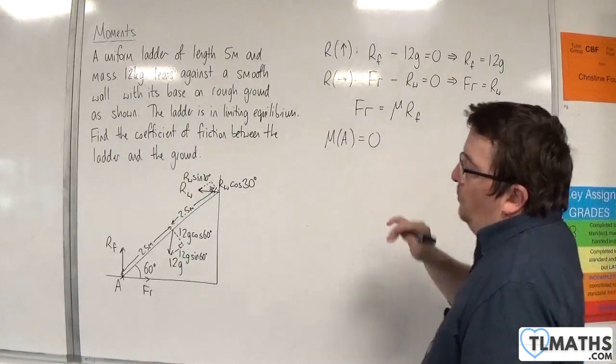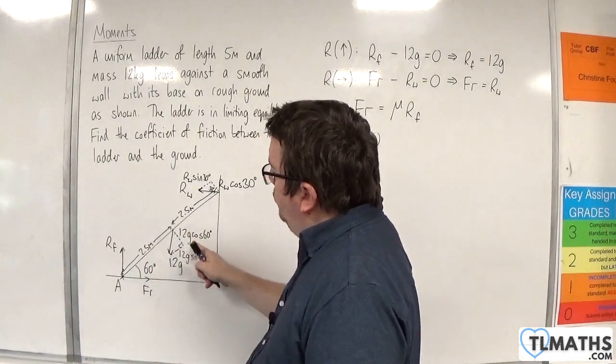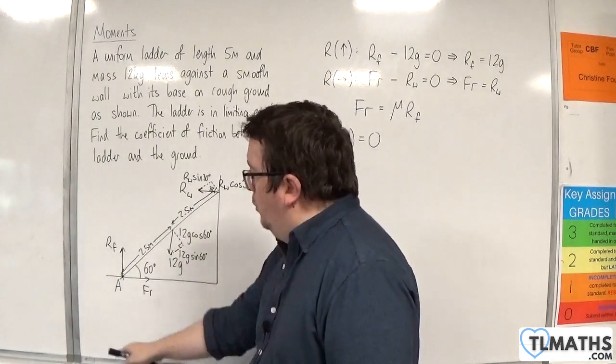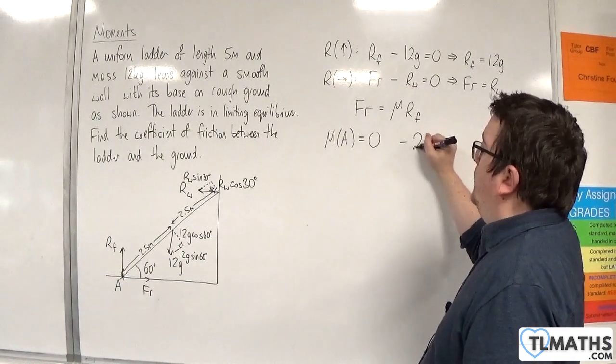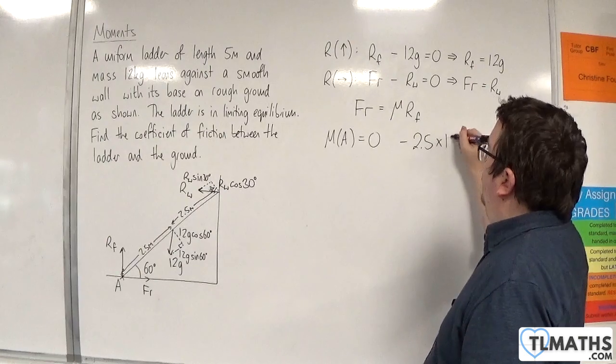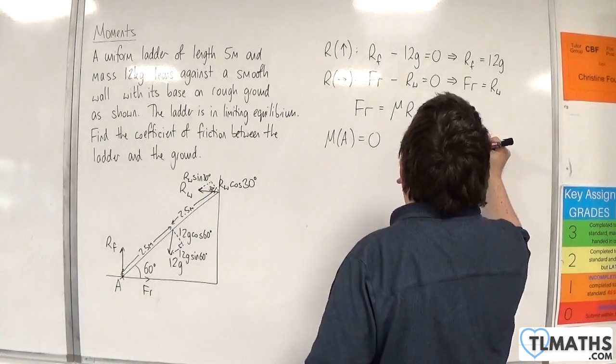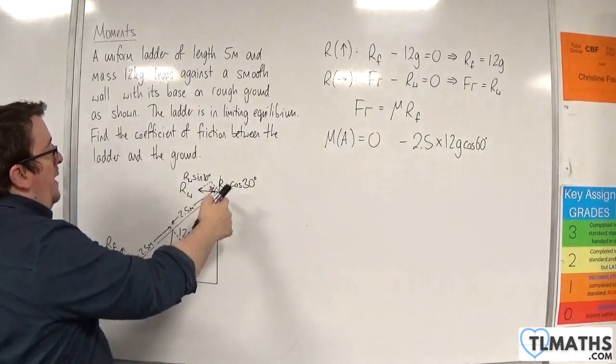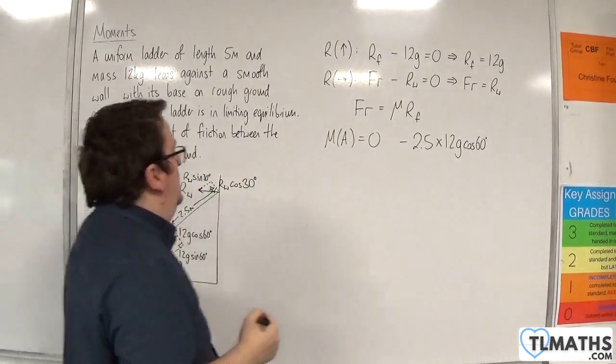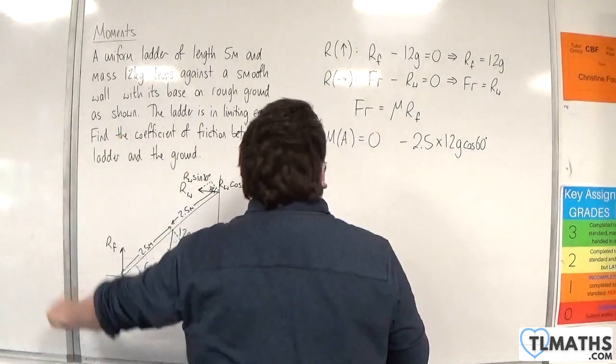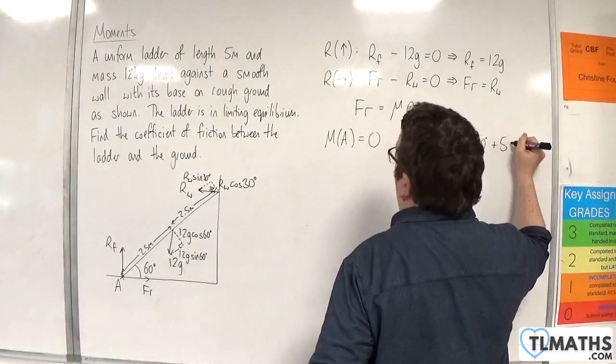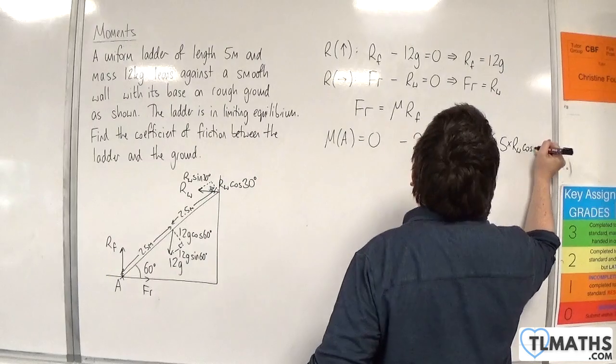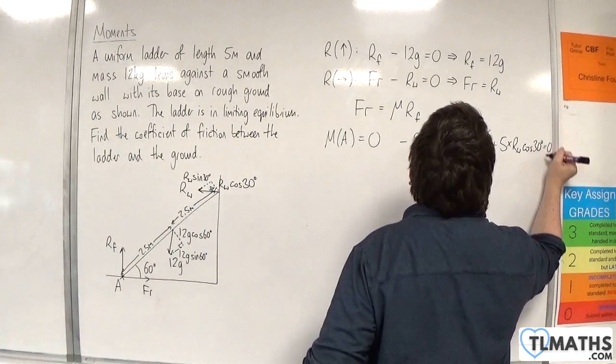Taking moments about point A then, we are 2.5 metres away from 12g cosine 60, and that's going clockwise. So take away 2.5 times 12g cosine 60, and then we're 5 metres away from Rw cosine 30, and that's going anticlockwise. So plus 5 times Rw cosine 30, and that's equals 0.